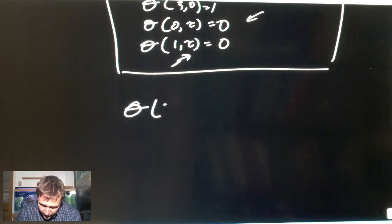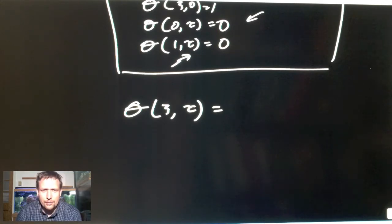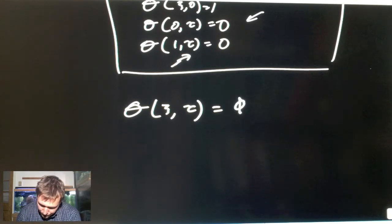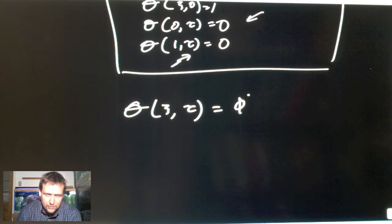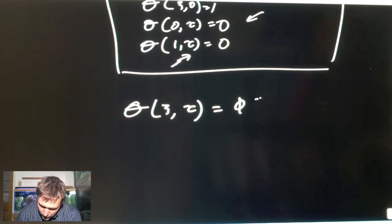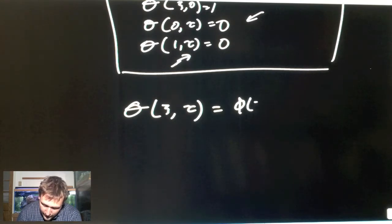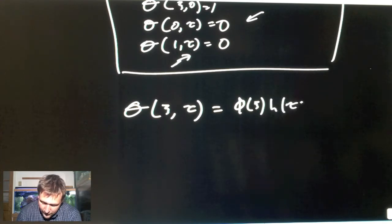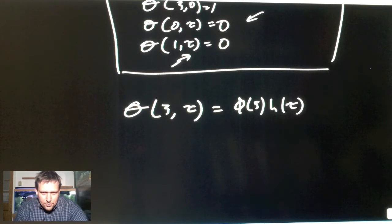You suppose a solution θ function of position and time is actually equal to the product of two independent solutions that when multiplied together give you the solution. They're solutions for the different variables, and what this will do is allow us to solve a system of ODEs as opposed to one PDE.